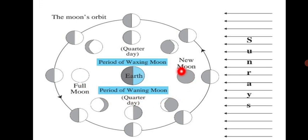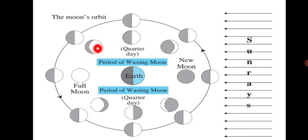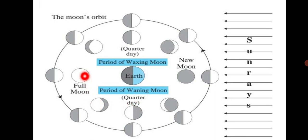On a new moon night, we cannot see any part of the moon. From full moon to new moon, the illuminated part of the moon seen from the Earth becomes smaller and smaller until no moon is visible at all. From new moon to full moon, it grows bigger and bigger again. These different shapes of the moon that we see are called the phases of the moon.